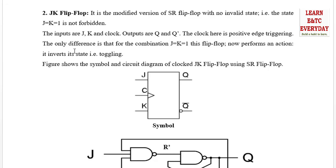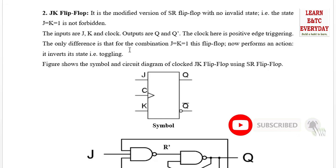In the JK flip-flop, when J equal to K equal to 1, the output toggles — meaning if Q was 1 it becomes 0, and Q complement becomes 1. A race condition still remains, but it is a toggling race condition. The only difference is that for the combination J equal to K equal to 1, the JK flip-flop performs an action: it inverts its state, which is called toggling.